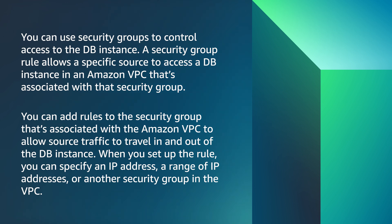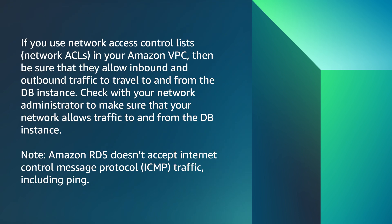When you set up the rule, you can specify an IP address, a range of IP addresses, or another security group in the VPC. If you use network access control lists, NACLs, in your Amazon VPC, then be sure that they allow inbound and outbound traffic to travel to and from the DB instance. Check with your network administrator to make sure that your network allows traffic to and from the DB instance. Note, Amazon RDS doesn't accept Internet Control Message Protocol, ICMP traffic, including ping.